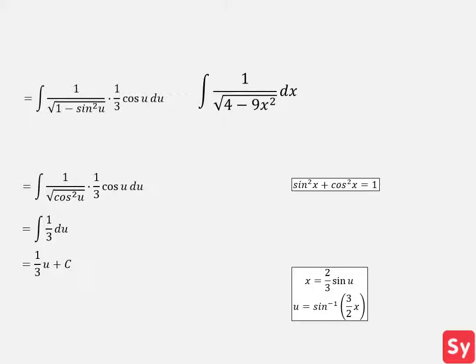Recall x equals 2 thirds times sine of u, so u equals arcsine of 3 halves times x. We substitute this back in and we get 1 third times the arcsine of 3 halves times x plus c as our answer.